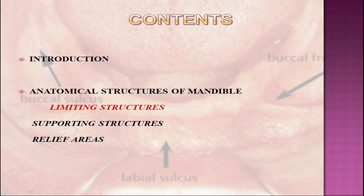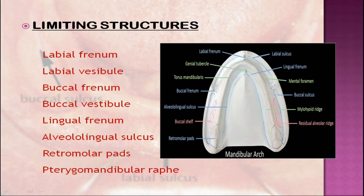The influence of limiting structures in the mandible is more difficult to record than in the maxilla because the structures on the lingual side must be considered as well as those around the labial and buccal surfaces of the denture. The structures on the lingual side are more complicated to control. The limiting structures of the mandibular arch are: labial frenum, labial vestibule, buccal frenum, buccal vestibule, lingual frenum, alveolingual sulcus, retromolar pads, and the pterygomandibular raphe.